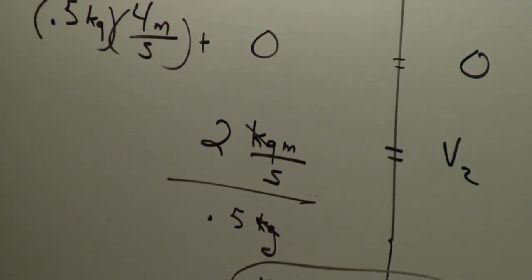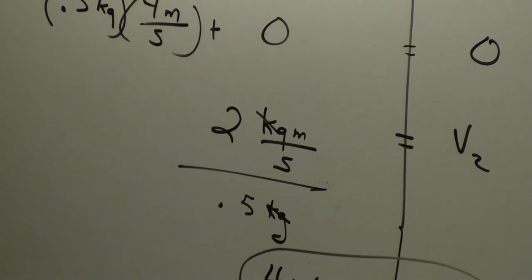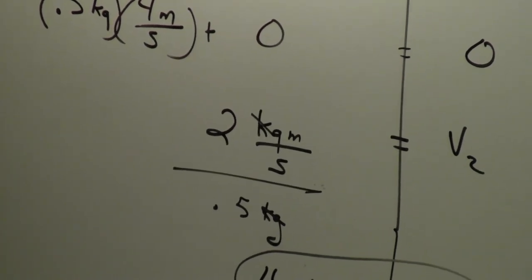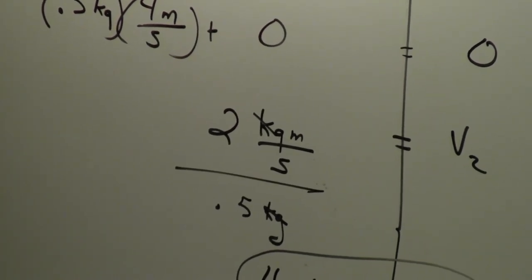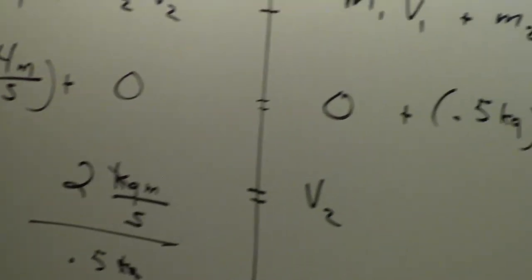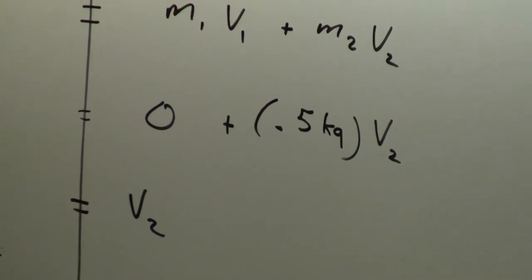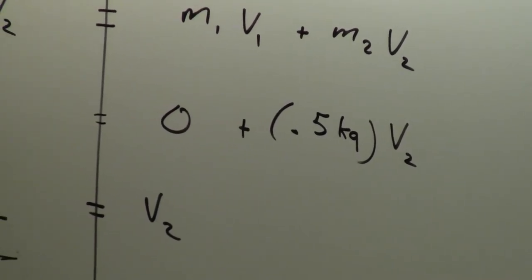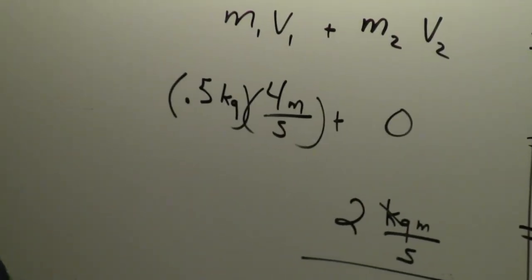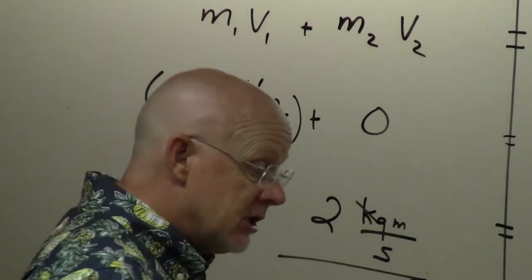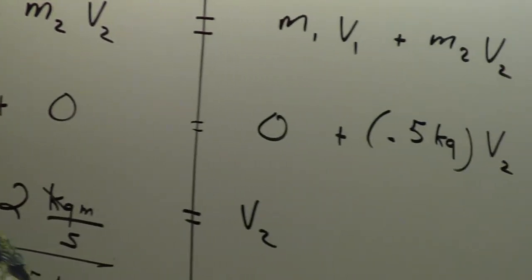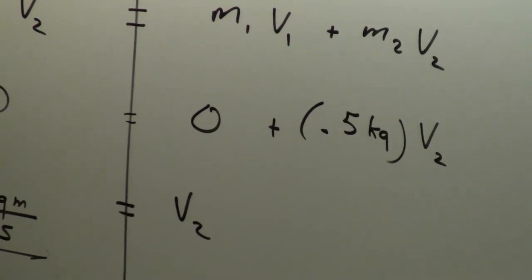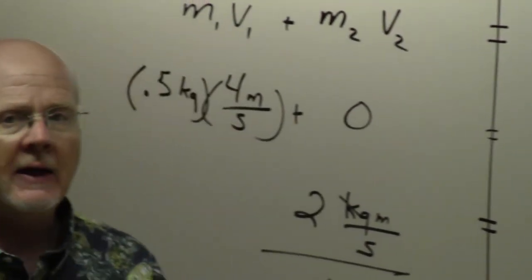Maybe that seems obvious. But some collisions are not so obvious. I picked the easiest one — one cart stopped and the other started, so they're exactly the same. Whatever force stopped the first one made the second one go. Some of these get harder.